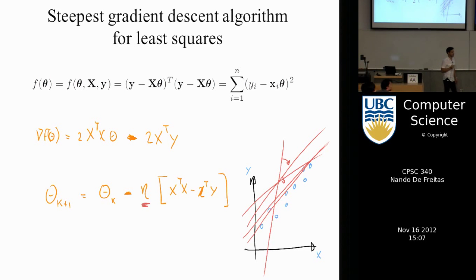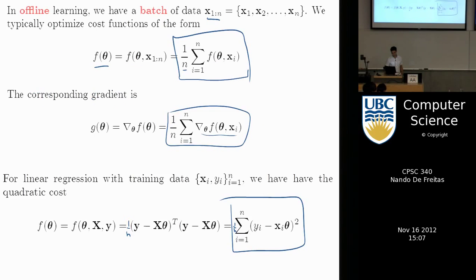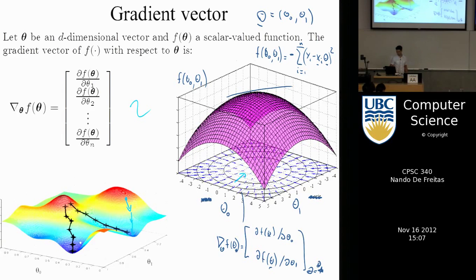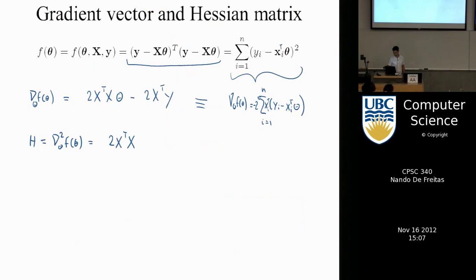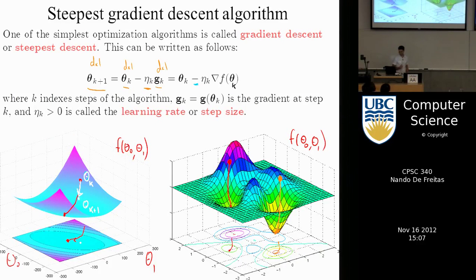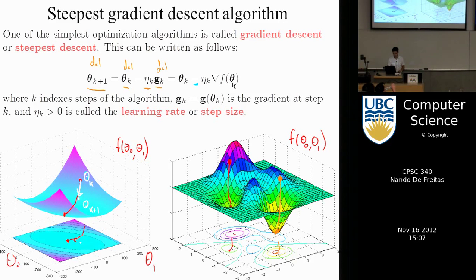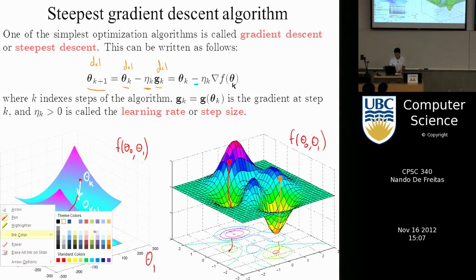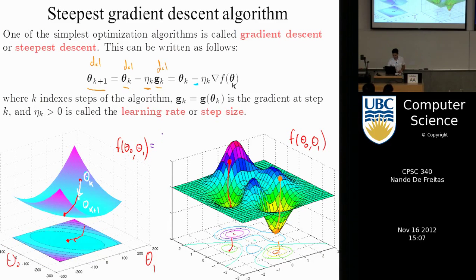f(theta_0, theta_1) is the surface, and the gradient is the partial derivatives. There are two parameters, so it's 2D with theta_0 and theta_1. The function is a quadratic surface — it could be something like what you have when you do least squares: (y - X*theta)^T (y - X*theta), which is basically the sum of squared errors.